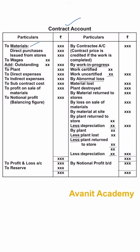On the debit side: materials, wages, plant, direct expenses, indirect expenses, subcontract cost, and profit on sale of materials. On the credit side: contract price, work in progress, abnormal loss, material return to store, and loss on sale of materials.